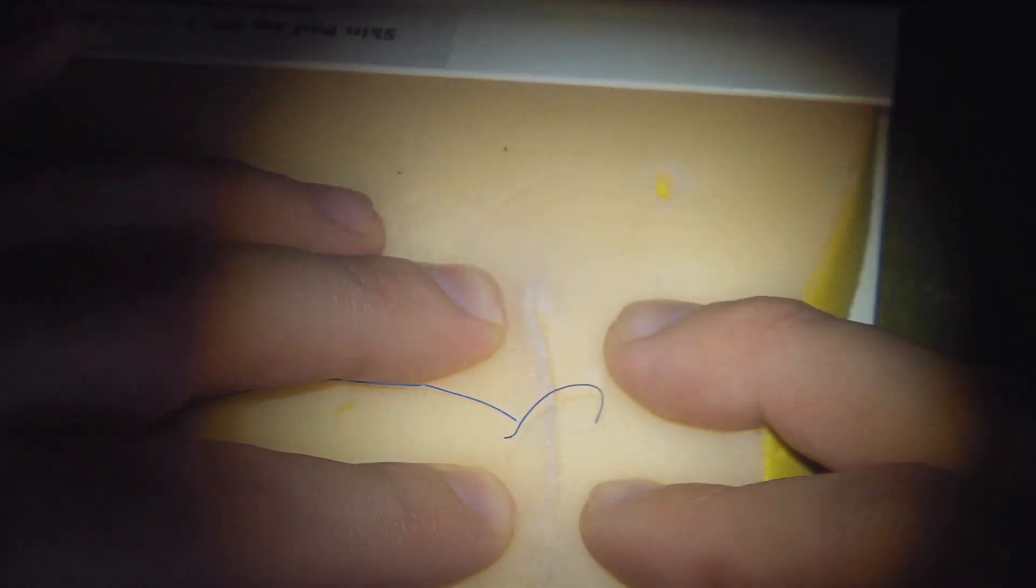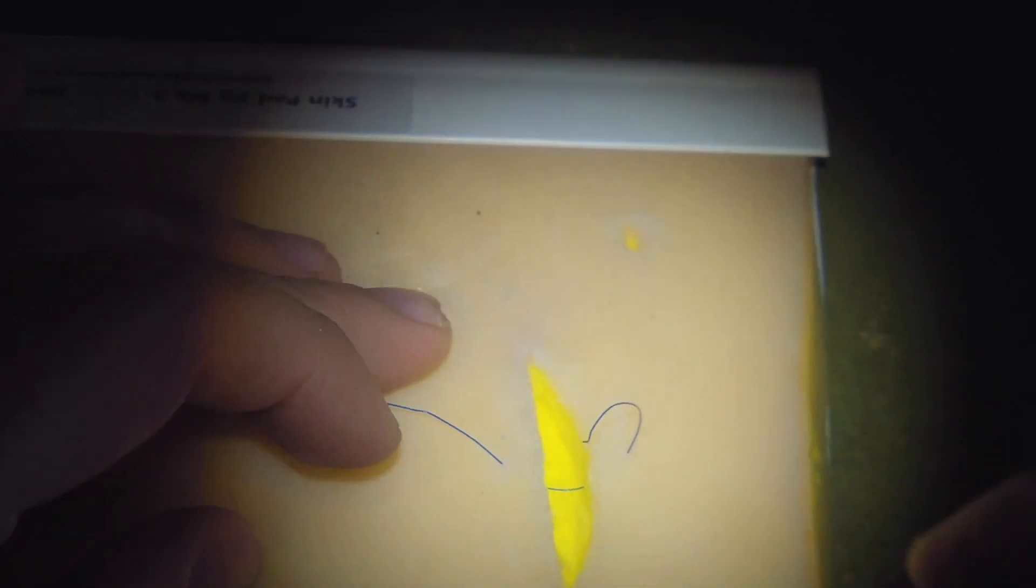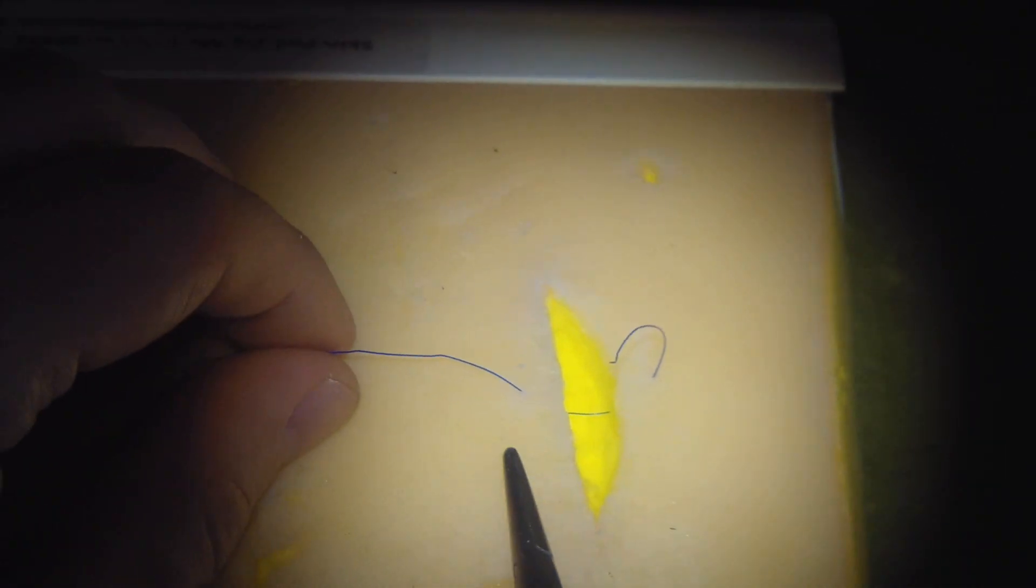But for the purposes of seeing the knot more easily, I'm going to do it on the surface. So here we've got our normal thread. We've gone in with the needle here and out here.